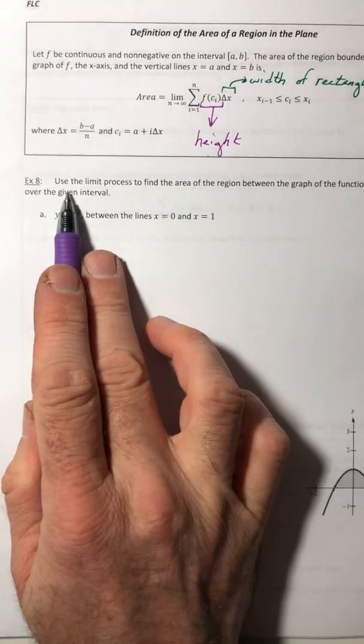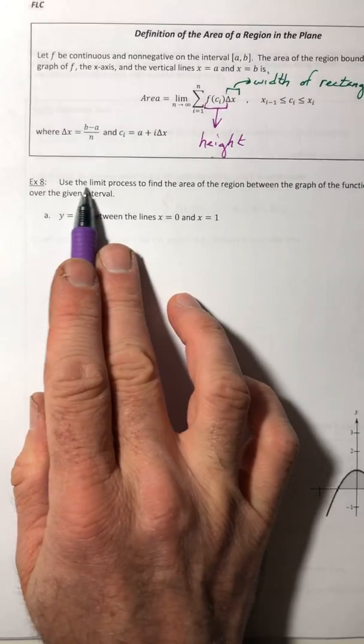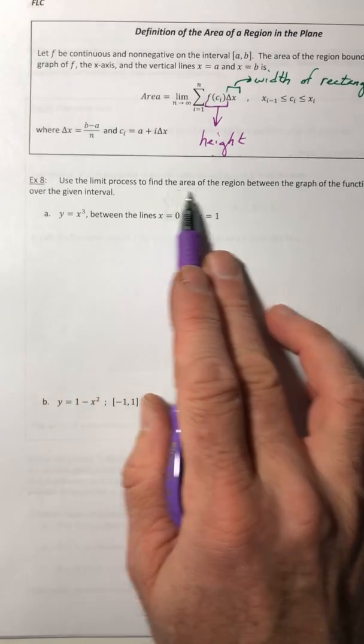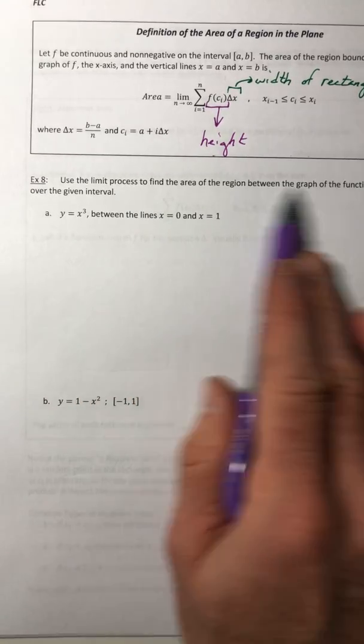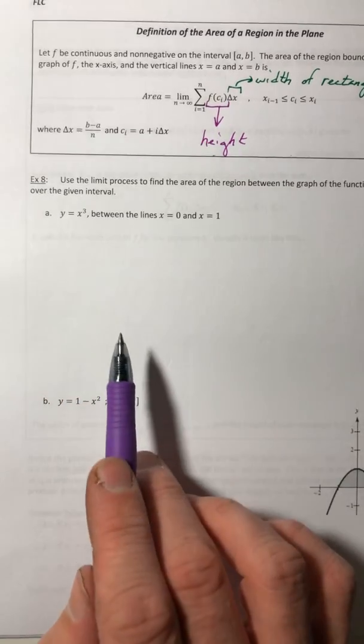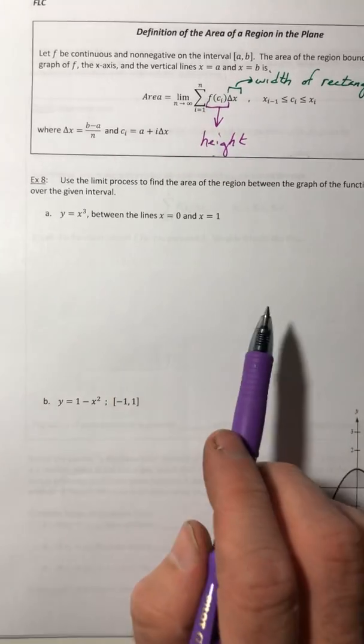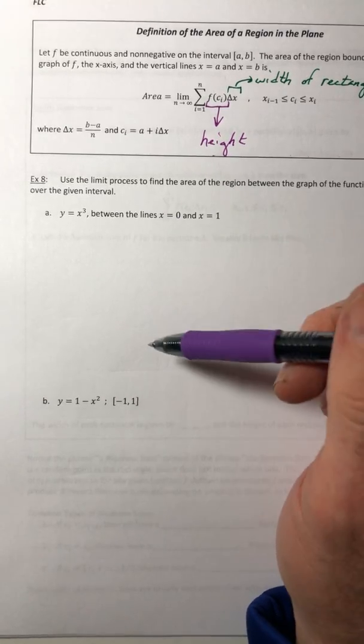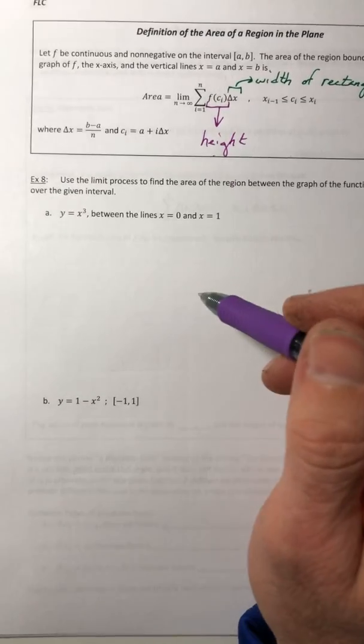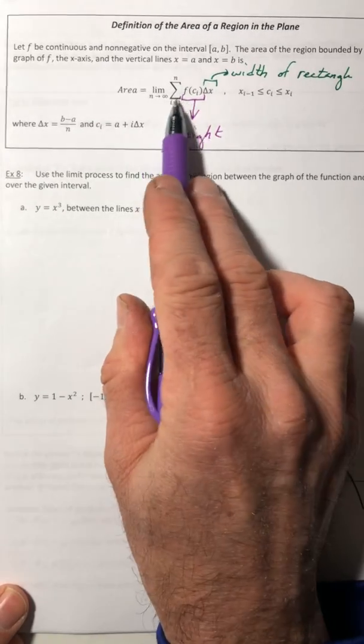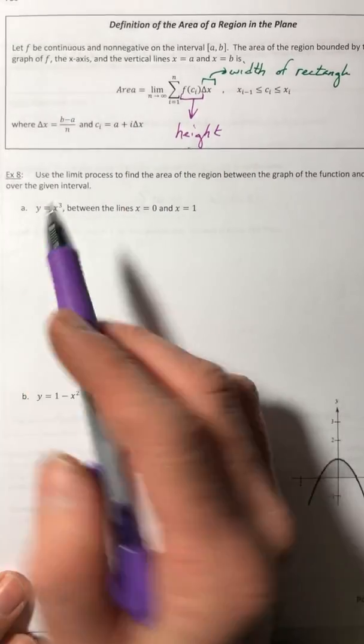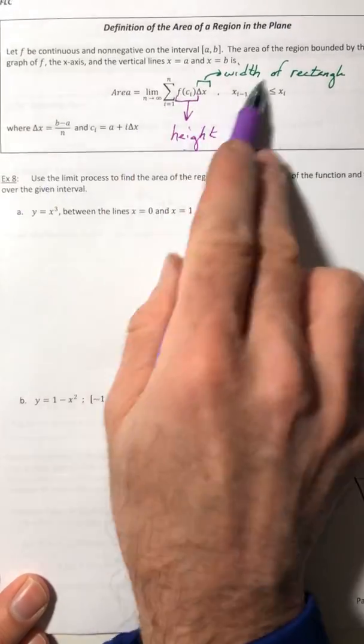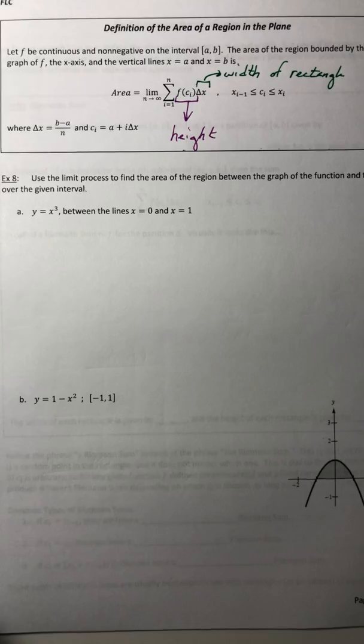With these, your instructions are going to be really similar. Just use the limit process, like what we just did in the previous example, to find the area of the region between the graph of the function and the x-axis over the given interval. It's not going to distinguish between are you using an upper sum or are you using a lower sum. It doesn't matter which one you use, it's going to come out to the same thing, because you're smashing an infinite amount of rectangles in there. Just follow this process and you can never go wrong.